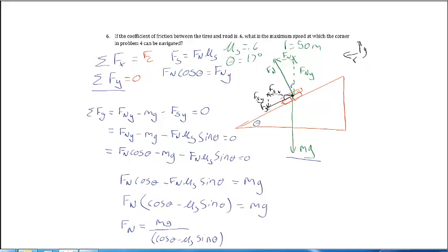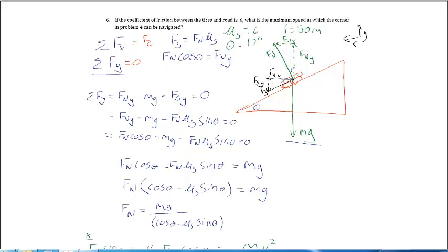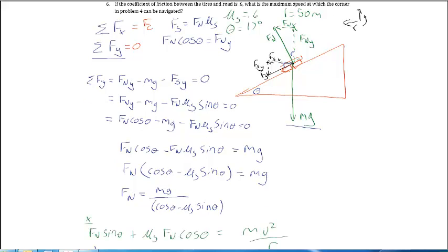So I added mg over. Then I pulled the normal force out. The normal force is multiplied on both these terms. So I undistributed it. And then I divided by the cosine. And I've got the normal force is equal to mg over cosine theta minus μs sine theta. Now I don't know m but I know the rest of these.